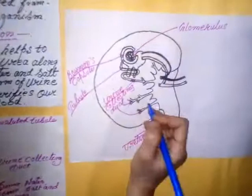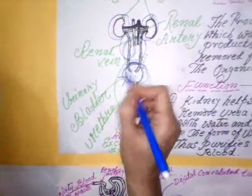From the urine collecting duct, millions of nephrons present in the kidney release urine into the ureter. From the ureter, urine passes into the urinary bladder. When a sufficient amount of urine is collected in the urinary bladder, due to pressure it moves out of our body through the urethra.